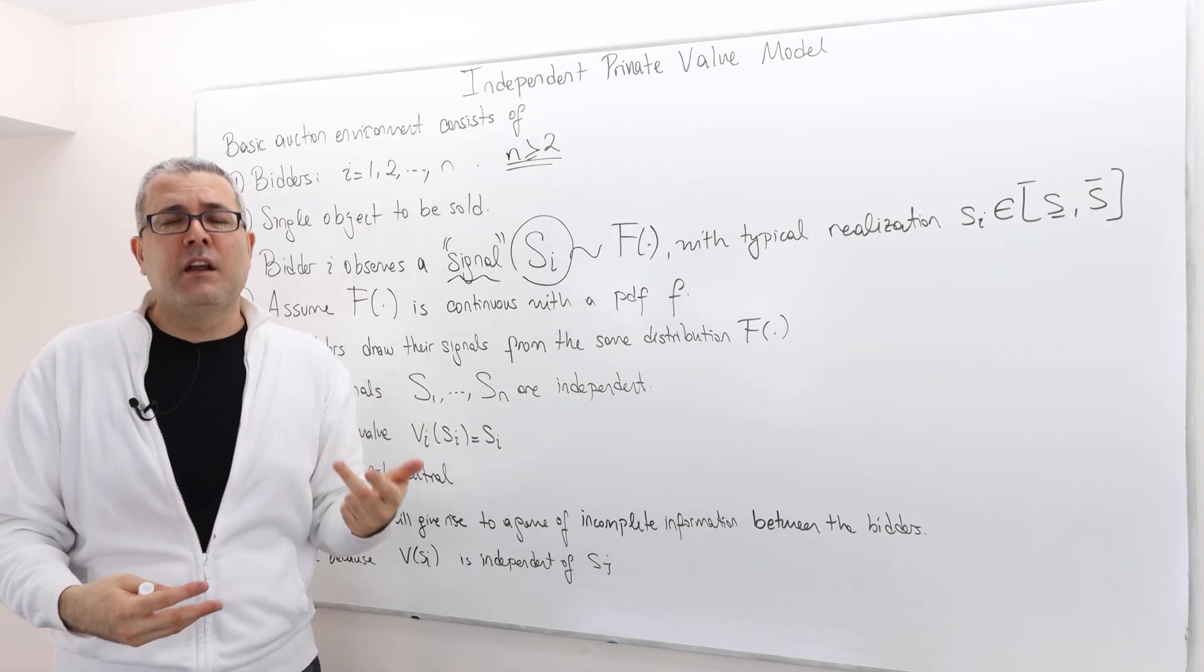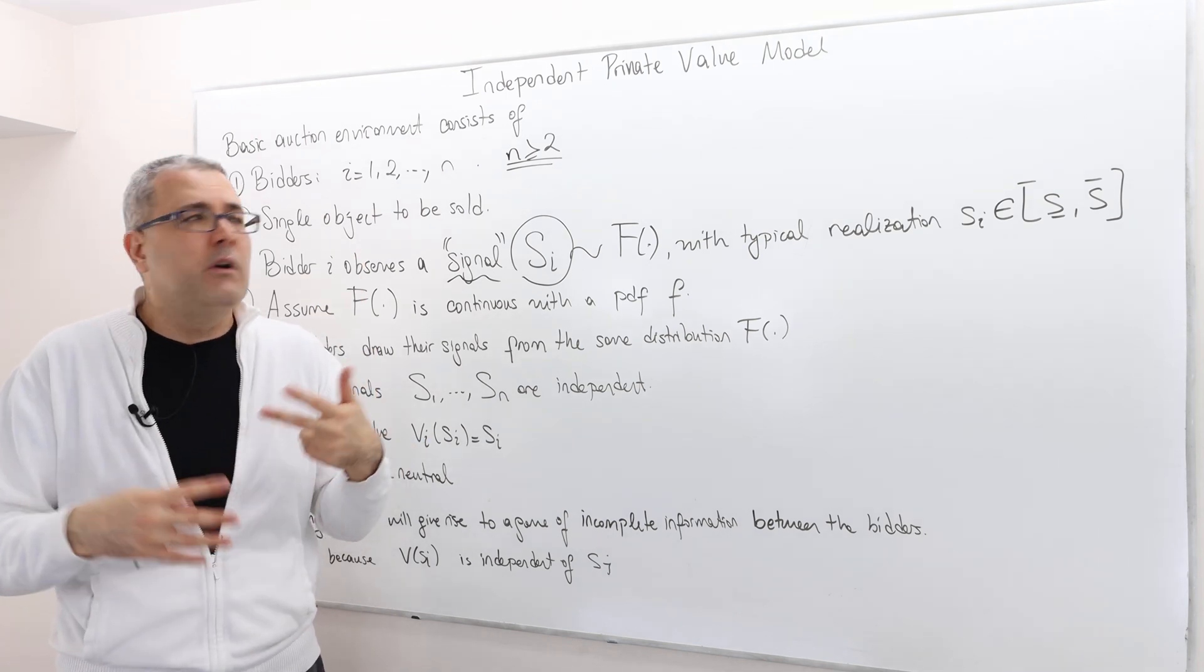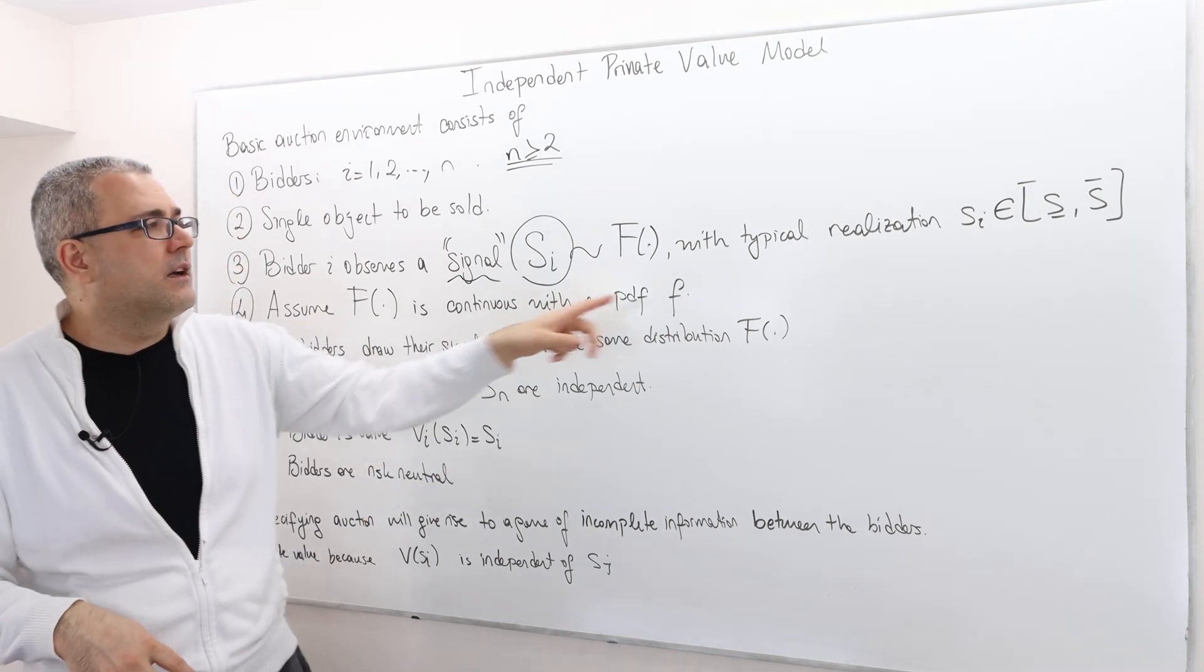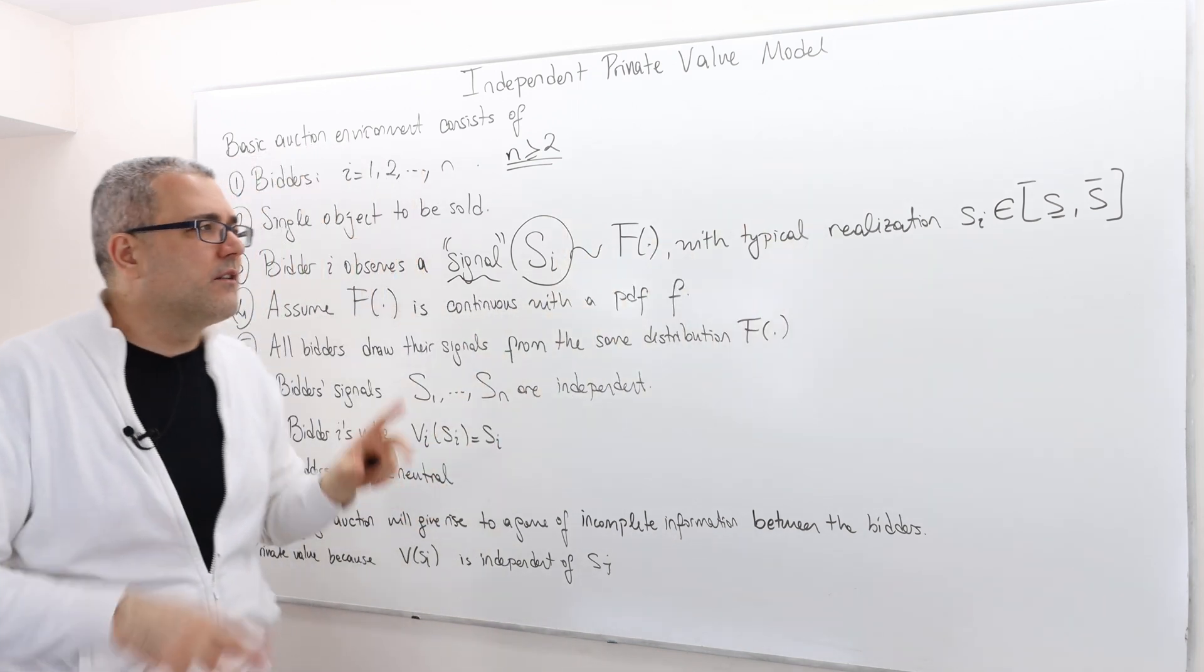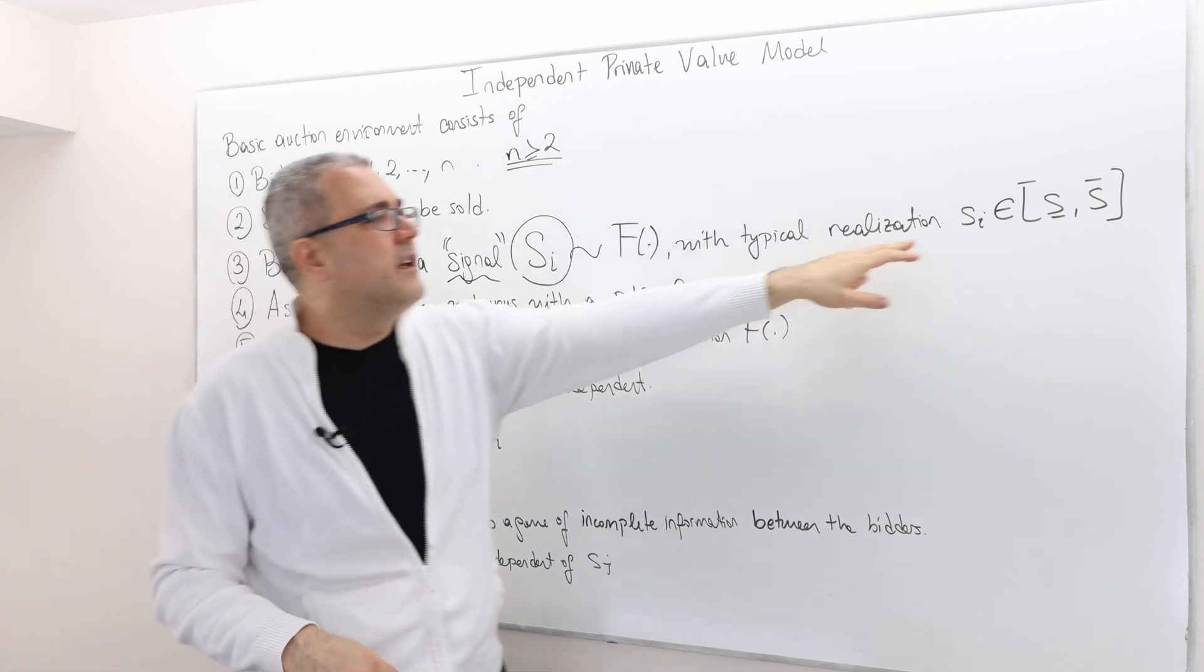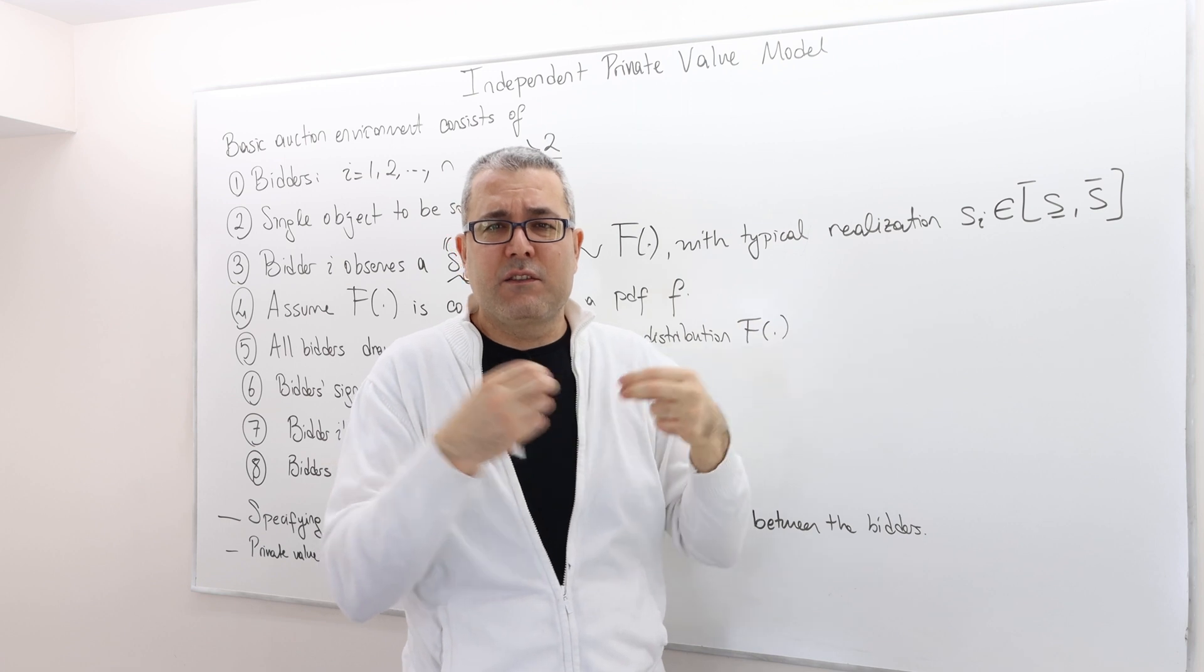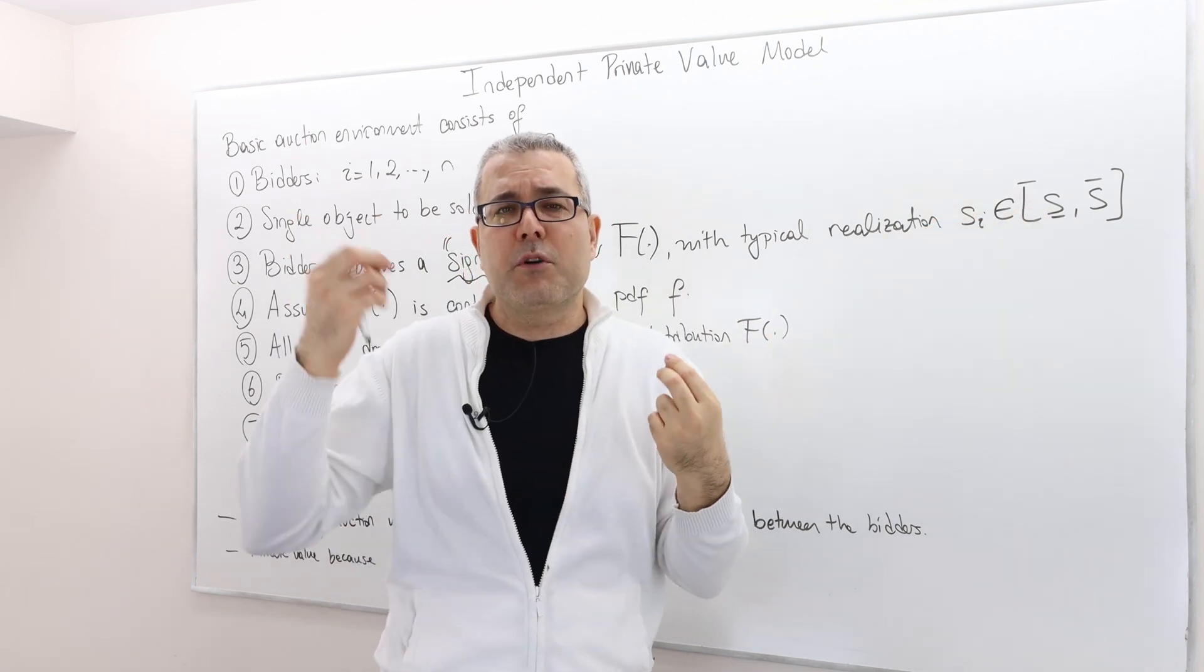Take the signal that way. The signal is distributed according to some probability distribution function means you could have picked another expert and that expert could have given you a different sort of signal. So the minimum value of this house or the minimum signal you're going to get is s lower bar and the maximum is s upper bar.